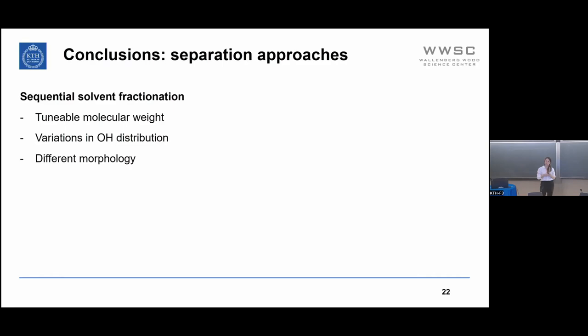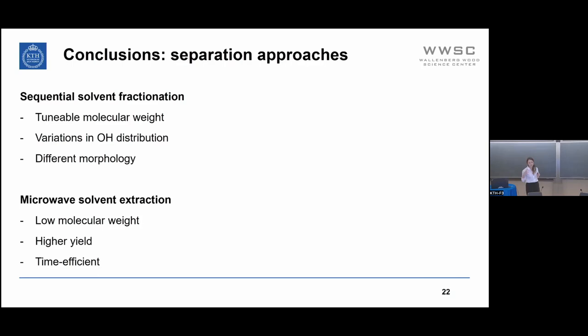In conclusion for Part 1: by sequential solvent fractionation, we were able to tune the molecular weight, vary the OH distribution, and obtain lignin of different morphologies. By microwave extraction, we obtained fractions of low molecular weight that are soluble in isopropanol, as well as higher molecular weight insoluble fractions, with a higher overall yield and a time-efficient process.